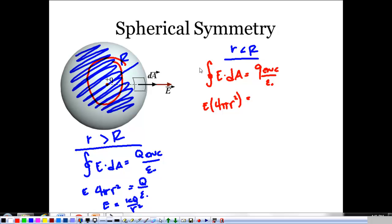All right, now, because we have a volume distribution rho, okay, my enclosed charge is going to be rho times my enclosed volume. Well, my enclosed volume here is a sphere enclosed in my Gaussian sphere of radius little r, so it's rho times 4 thirds pi little r cubed.